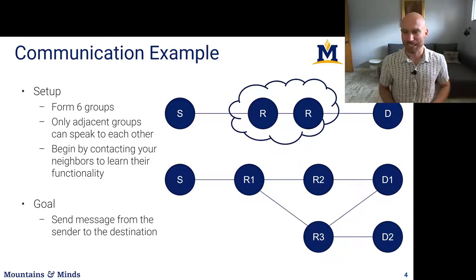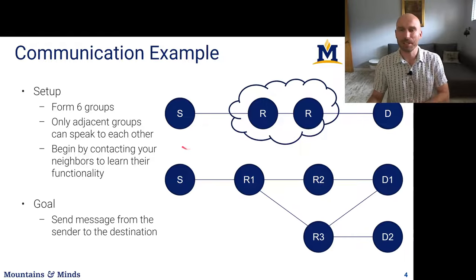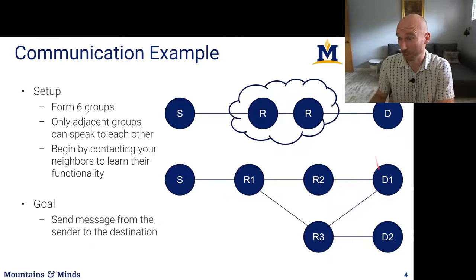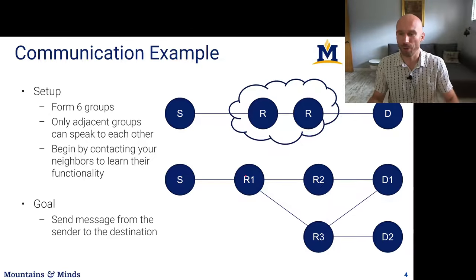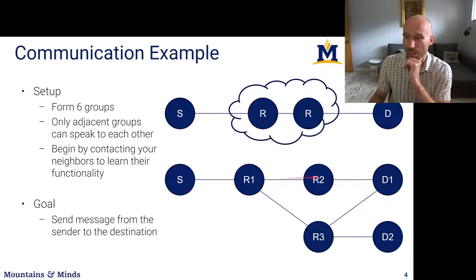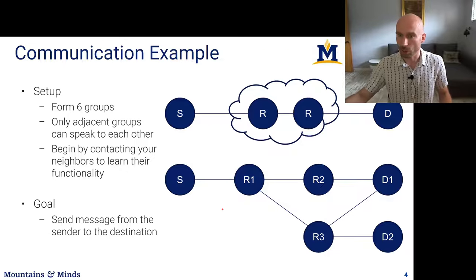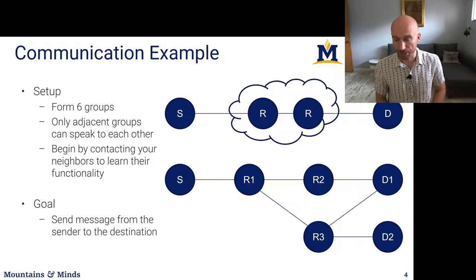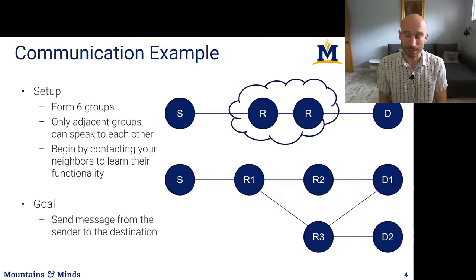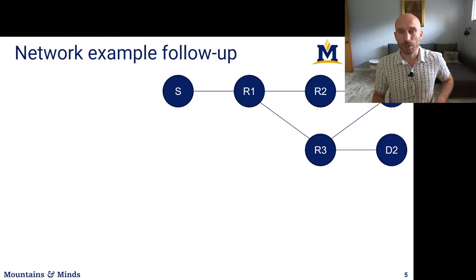The way this activity works: the first thing you have to figure out is the connectivity between routers. There's a source, one or two destinations, and some number of routers, each with connectivity I tell you about. For example, the source can only talk to router one, and router two can only talk to router one and destination one. Each node is not aware of the connectivity of the entire network — only its local connectivity to nearby nodes. Being able to run a network without knowing the whole end-to-end topology is something the internet has to achieve.